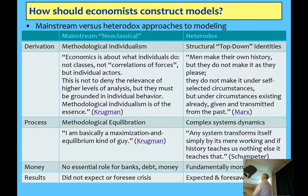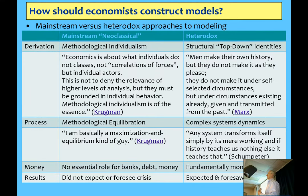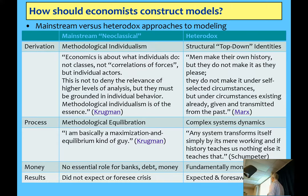The alternative approach, in complex systems dynamics, is from a person called Schumpeter — the father of what's called evolutionary economics. He took Darwin's approach to how species have evolved and applied that to how firms behave. Rather than talking about maximisation and equilibrium, he says: 'Any system transforms itself simply by its mere workings. And if history teaches us nothing else, it teaches us that.' In other words, we're not in a state of equilibrium — we're always changing and going through time.